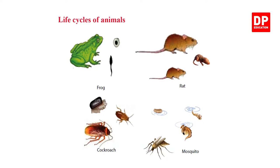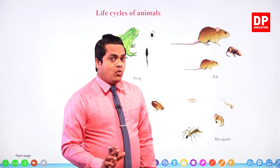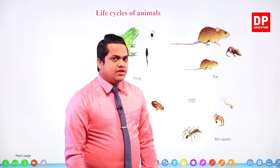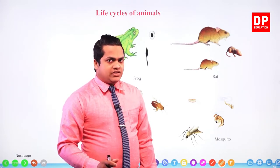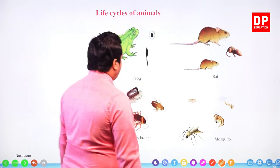Images of these organisms we already discussed — we identified what are the stages of each organism separately. Here you can observe the life cycle of a frog, life cycle of a rat, life cycle of a cockroach, and life cycle of a mosquito. Now I am going to write down each of their stages and explain their special features. If you take a frog: